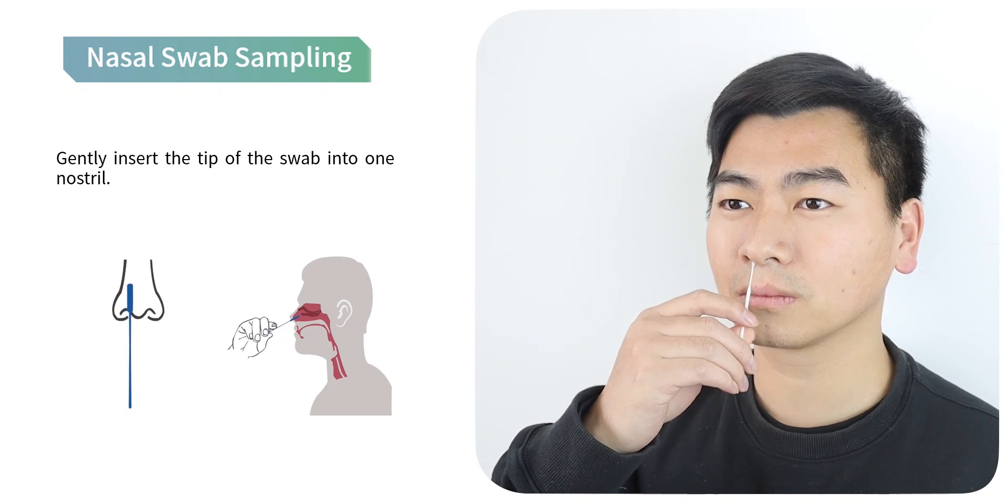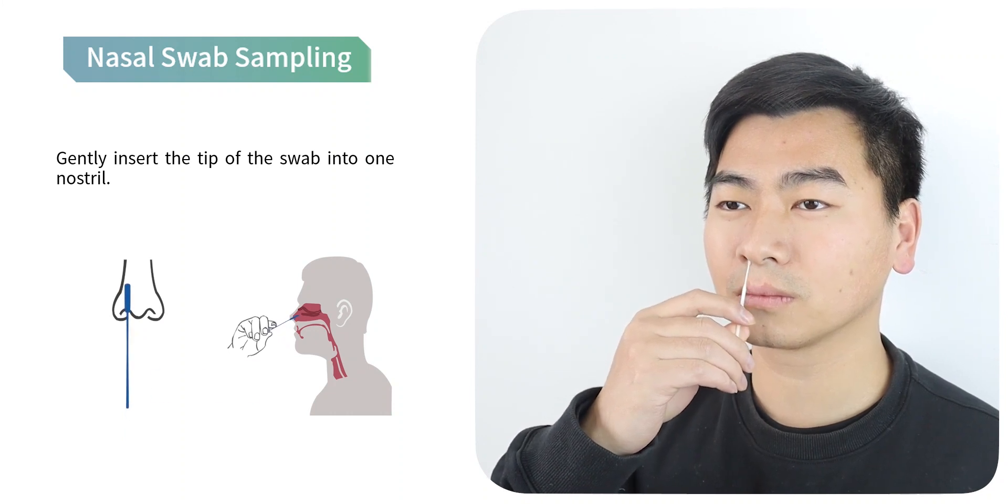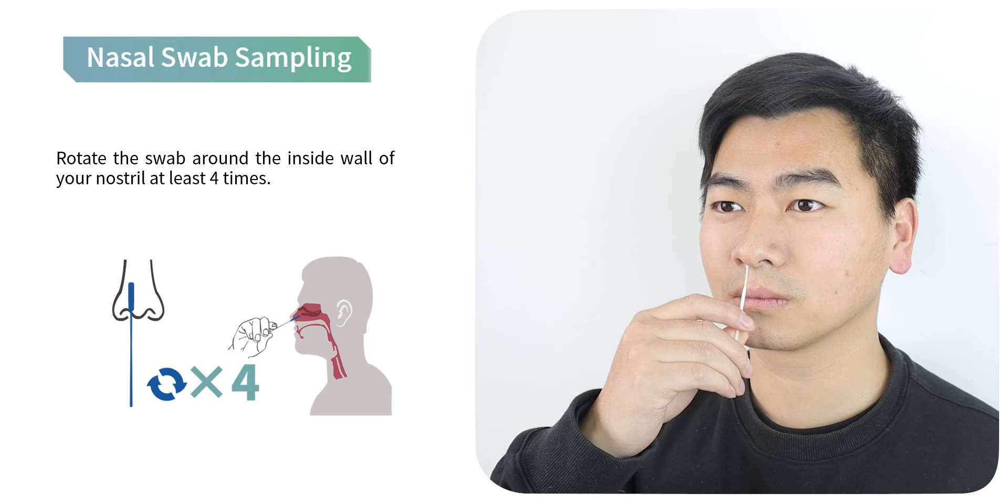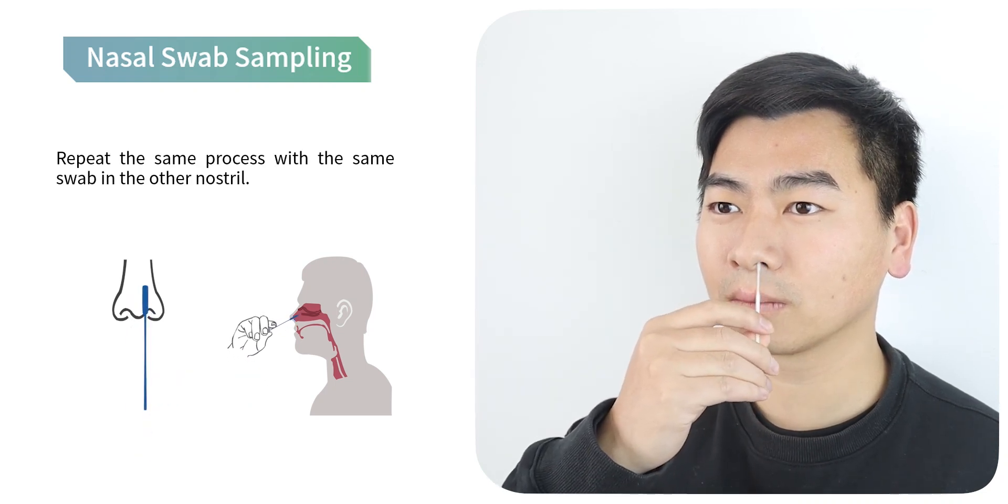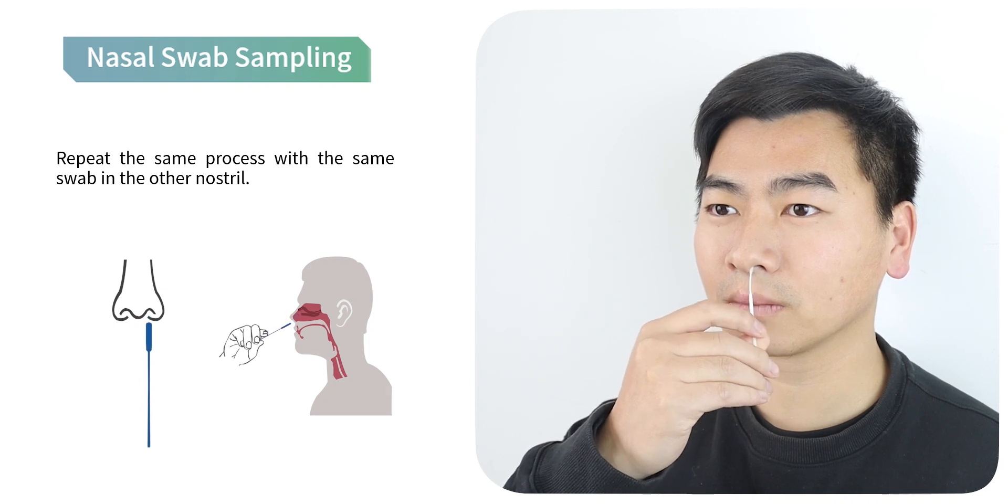Nasal swab sampling: gently insert the tip of the swab into one nostril, rotate the swab around the inside wall of your nostril at least 4 times, then repeat the same process with the same swab in the other nostril.